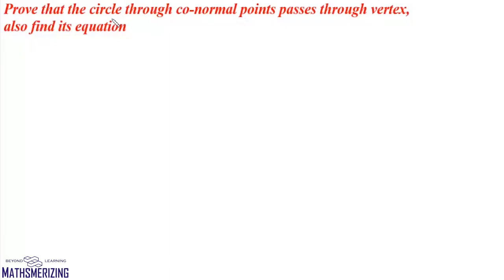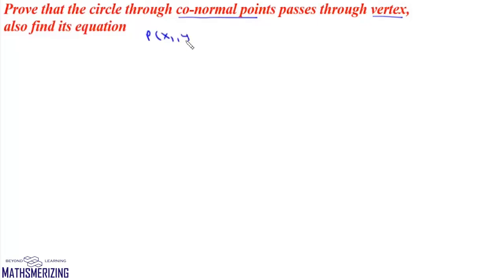Here we need to prove that a circle through conormal points passes through the vertex of the parabola, and we need to find its equation also. Suppose there is a point P which is (x1, y1), and from this point three normals are drawn to the parabola.